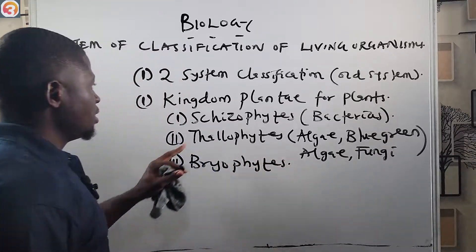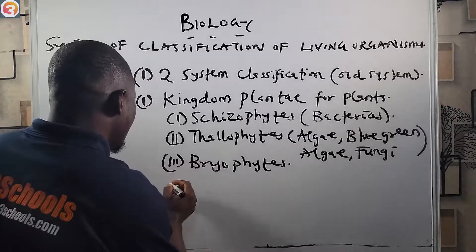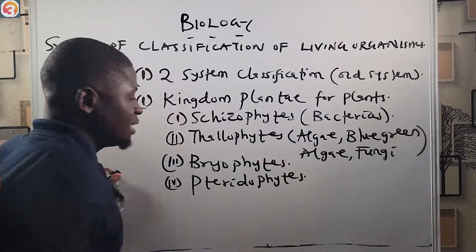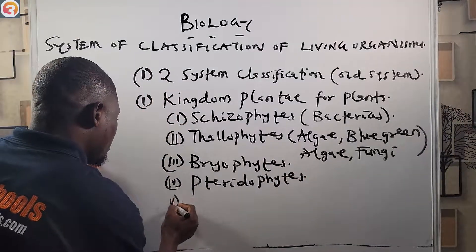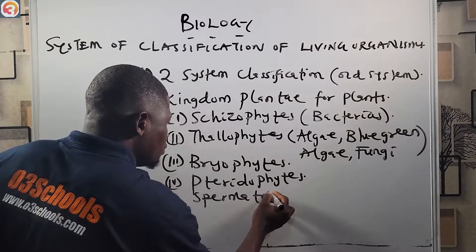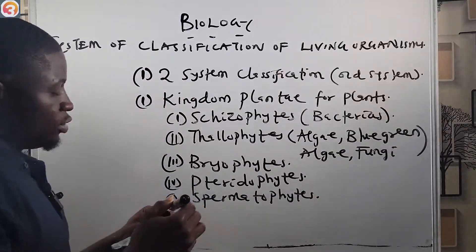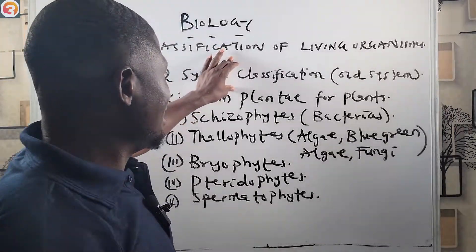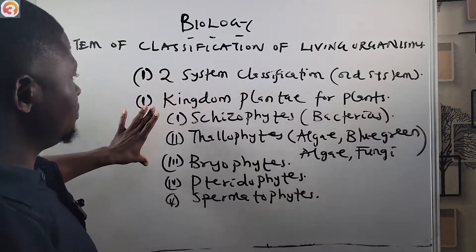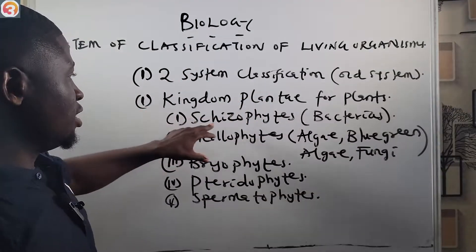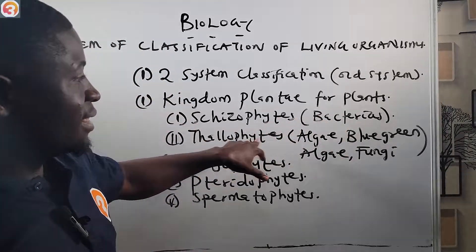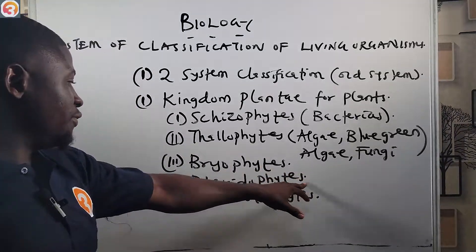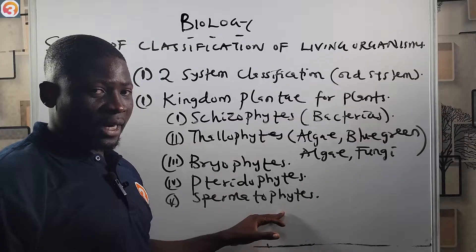Continuing the classification under Kingdom Plantae: third is Bryophyta, fourth is Pteridophyta, and fifth is Spermatophyta. So the two-kingdom classification divides plants into five groups: Schizophyta, Thallophyta, Bryophyta, Pteridophyta, and Spermatophyta.